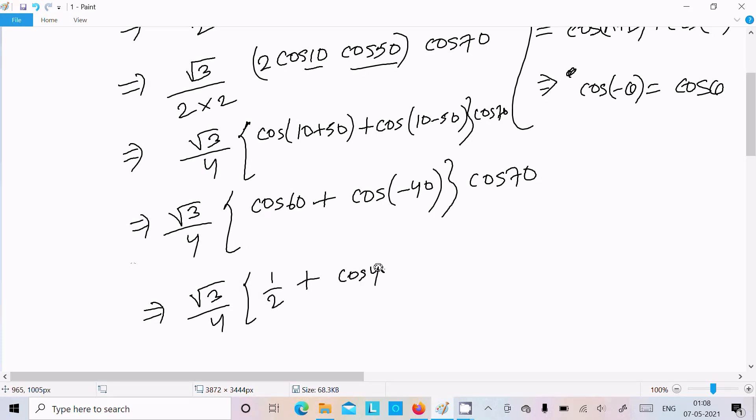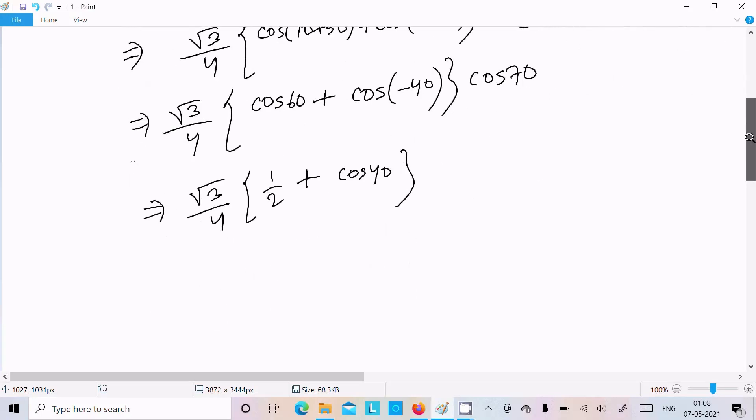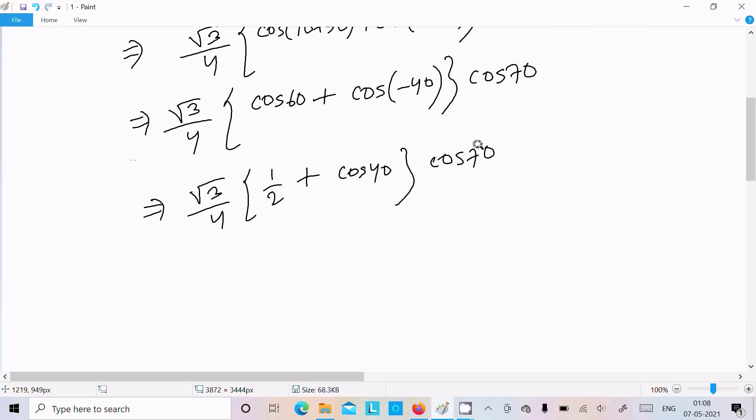And this is cos40, and thereafter cos70 is there. Now next with this cos70 we need to multiply.